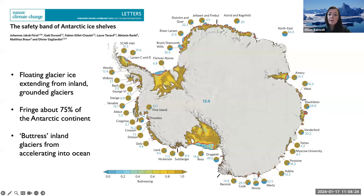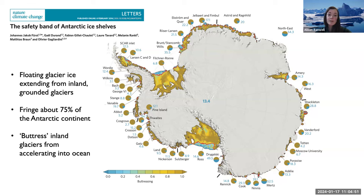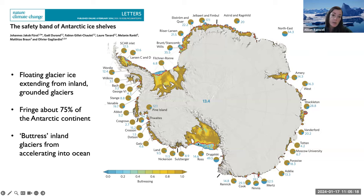Some background: the future contribution of the Antarctic ice sheet to global sea level rise is very uncertain, largely because the stability of Antarctica's ice shelves under a warming climate is uncertain. Ice shelves are the floating extensions of grounded glacier ice, not sea ice. They fringe about 75% of the continent and act to buttress — hold back — upstream grounded ice from flowing more rapidly into the ocean, and it's that upstream ice that contributes to sea level rise.